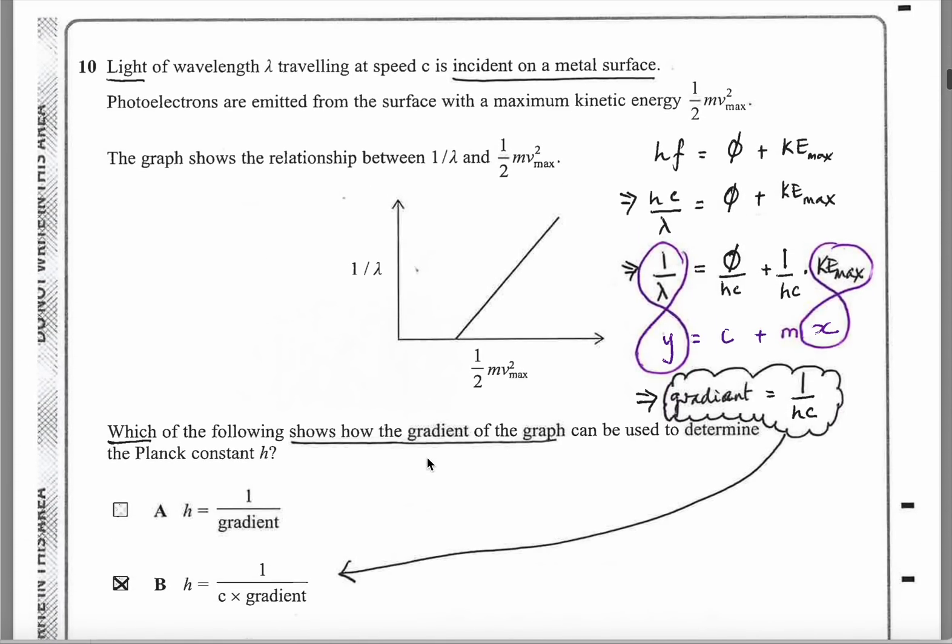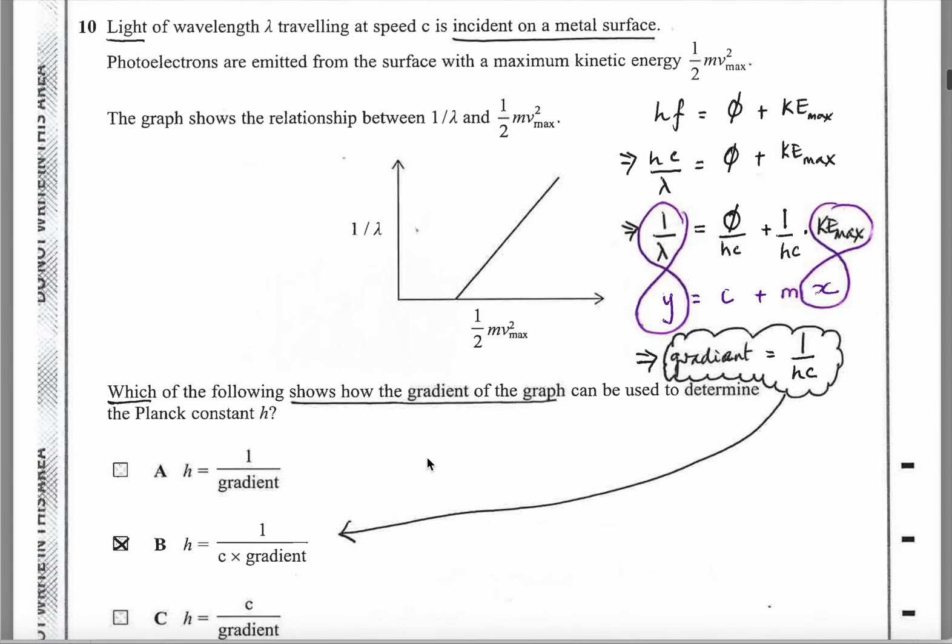Question 10. Light of wavelength lambda traveling at speed c is incident on a metal surface. So we're talking about the photoelectric effect. Photoelectrons are emitted from the surface with a maximum kinetic energy of half mv squared, where v is the maximum velocity. The graph shows a relationship between one over lambda on the y-axis and the maximum kinetic energy on the x-axis. I've written the equation out for the photoelectric effect. The energy of the incoming photon equals the minimum energy to get an electron to the surface. Any spare energy here will give you excess kinetic energy.